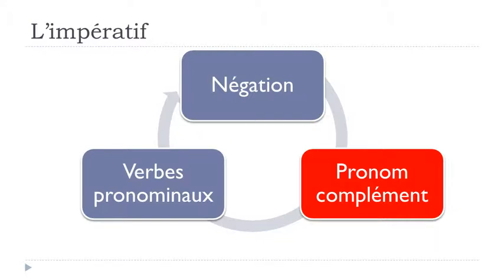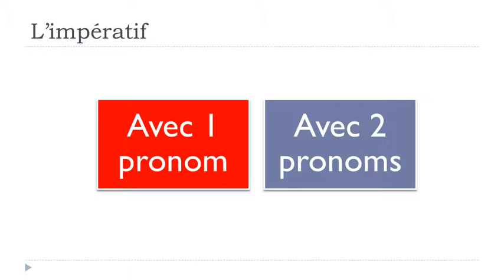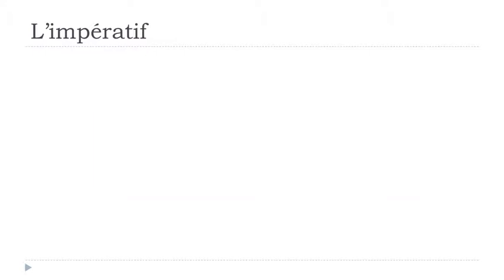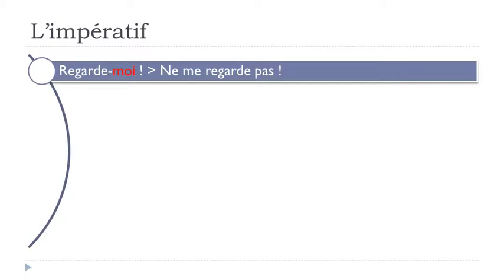Now let's look at pronouns with the imperatif. With one pronoun in the affirmative, pronouns come AFTER the verb. 'Me' changes to 'moi': 'Regarde-moi!' But in the negative form, it reverts: 'Ne me regarde pas!' Similarly, 'te' changes to 'toi': 'Regarde-toi!' becomes 'Ne te regarde pas!' in the negative.